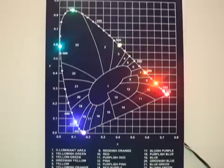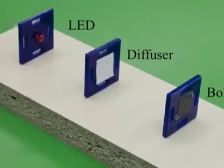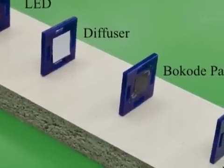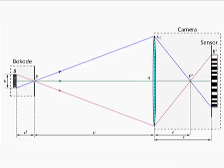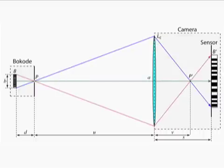The Bocode is based on the concept of the bokeh effect in ordinary camera lenses. A cone of rays exiting from an out-of-focus scene point results in a disc-like blur on the camera sensor. We encode information in this bokeh by placing a pinhole or a tiny lenslet in front of a printed pattern. The lenslet collimates the rays leaving from a point on the pattern, making them parallel to one another. These parallel rays impinge on a camera lens focused at infinity, and we obtain a magnified image of the Bocode pattern on the sensor.